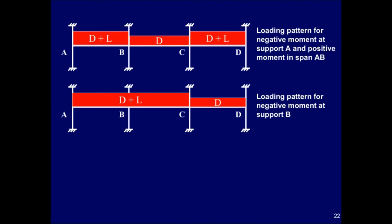In the second loading pattern, the live load is applied on adjacent spans. This produces the maximum negative gravity moment at support B.